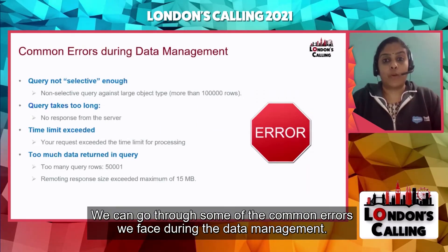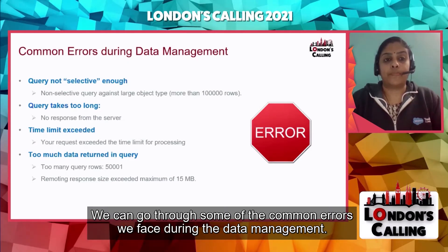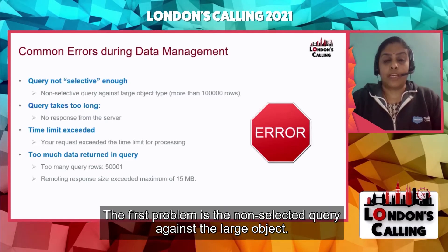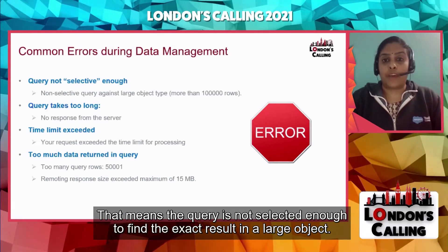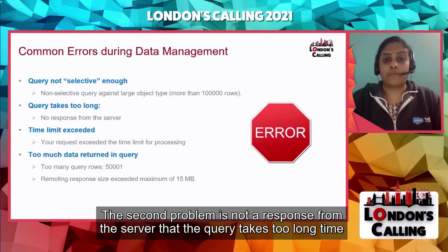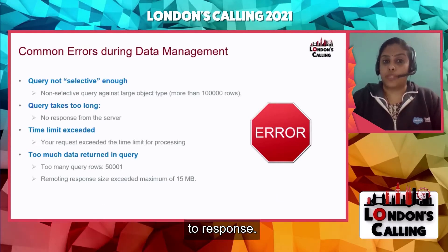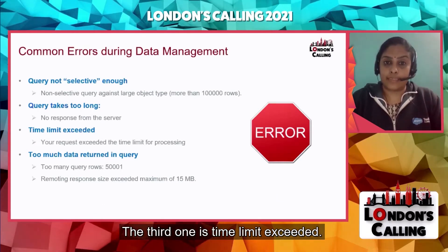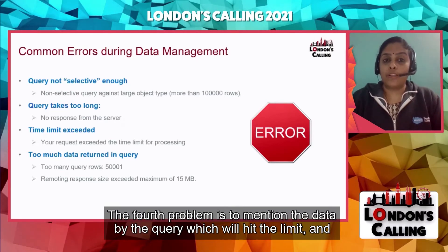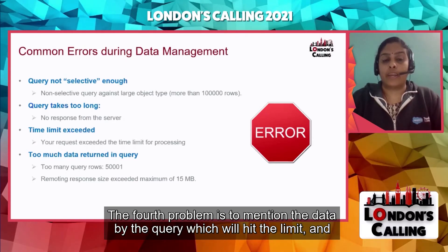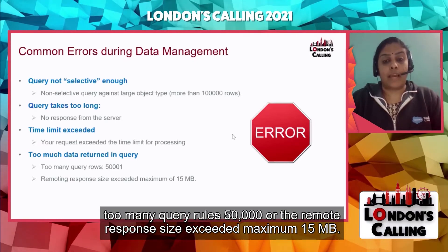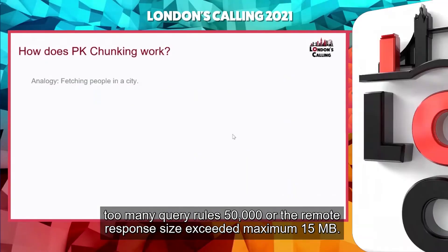We can go through some common errors faced during data management. The first problem is a non-selective query against a large object — the query is not selective enough to find the exact result. The second is no response from the server — the query takes too long to respond. The third is time limit exceeded — the request exceeded the allowed time for processing. The fourth is too much data retrieved, hitting governor limits: too many query rows (50,000) or the remote response size exceeded the maximum of 15 MB.